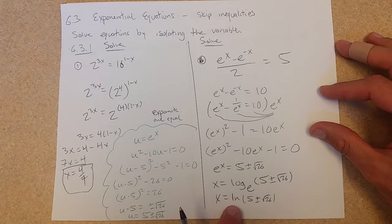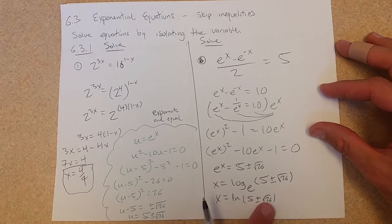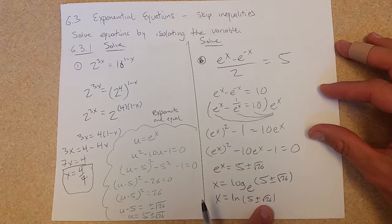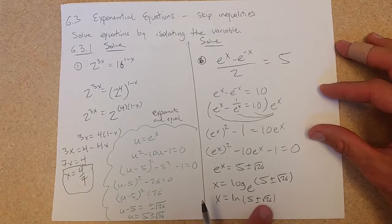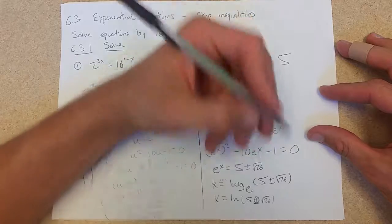I have to make sure this is, the domain of a log is 0 to infinity. This 5 minus square root 26 would be negative. How do I know? Square root 26 is a little bigger than square root 25, which is 5. So I'm going to only go with the positive. I'm going to throw away the negative.